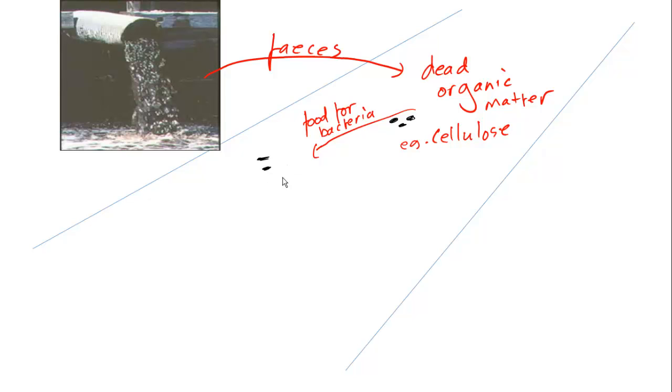Just colour them in black. There we go. And we just get lots and lots of bacteria because they've got this lovely new food supply of your faeces or someone else's faeces. And so we get lots of these. So what happens now?